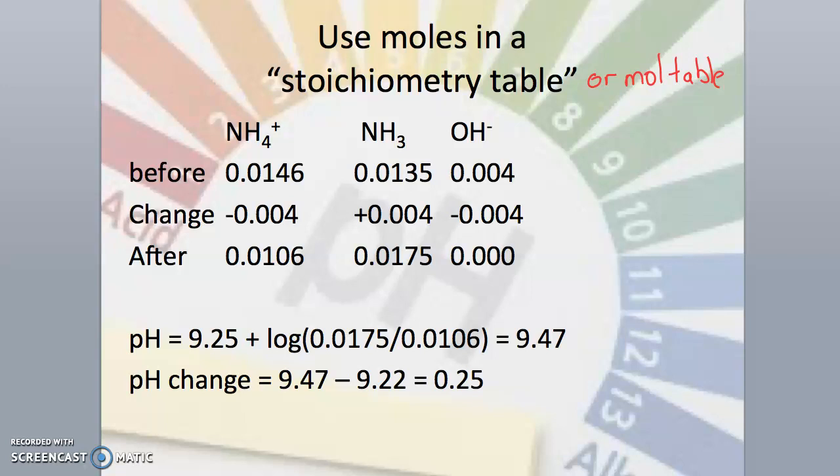We can put these new values into our equation and solve for the pH. The change is represented as final pH minus the initial pH, and is equal to 0.25.